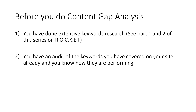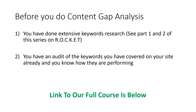Parts one and two focus on the first letter 'R,' standing for research. There should be a card popping up on screen now that you can click on, or I'll put a link to that playlist in the description. The other thing you need to do, once you're happy with keyword research and understand all the terminology, is audit the keywords you've covered on your site and those of your competitors. These are the two main parts of content gap analysis.